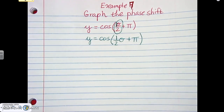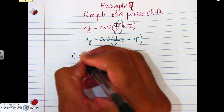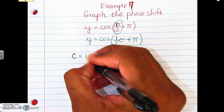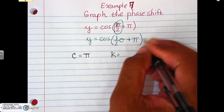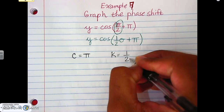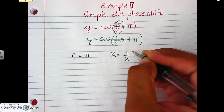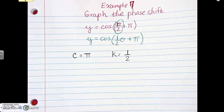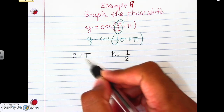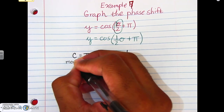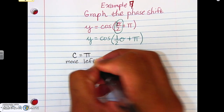Now that we have that broken apart, we can figure out what C is and what the phase shift is. C for this problem is pi — that part right there gives you C. K must be what's in front of theta, which is one-half. Since C is a positive pi, it means we should be moving left — it goes opposite of what you think.